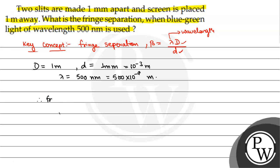Fringe separation is also called fringe width. So beta equals lambda D by d. Lambda is 500 into 10 to the power minus 9 meters, capital D is 1 meter, and small d is 10 to the power minus 3 meters.